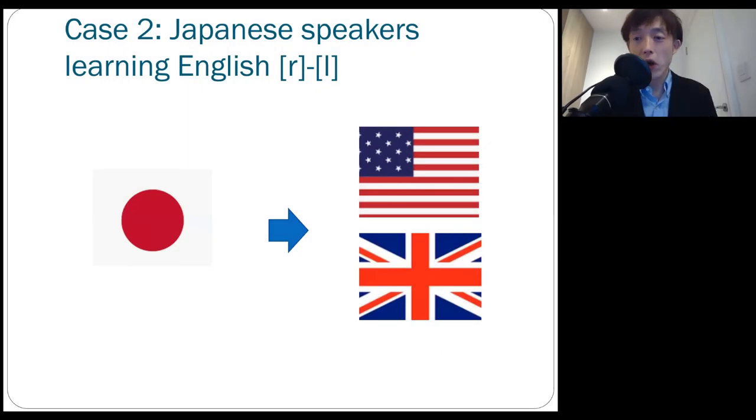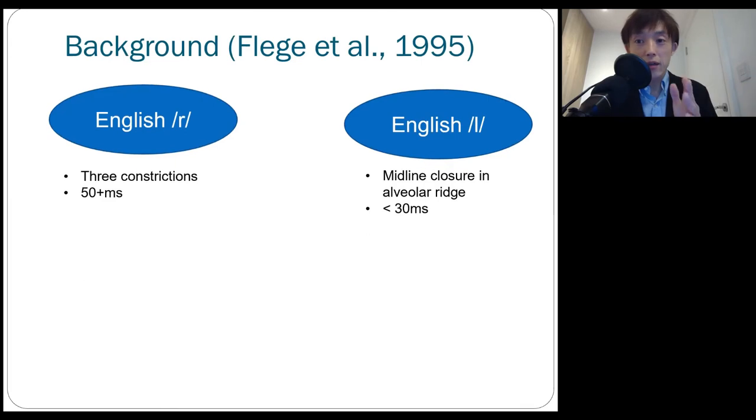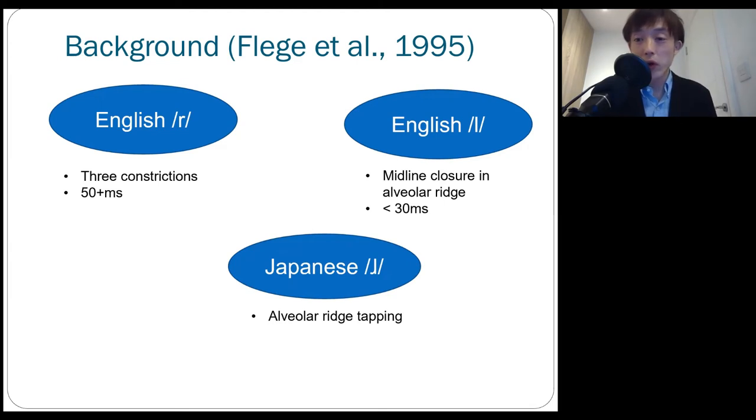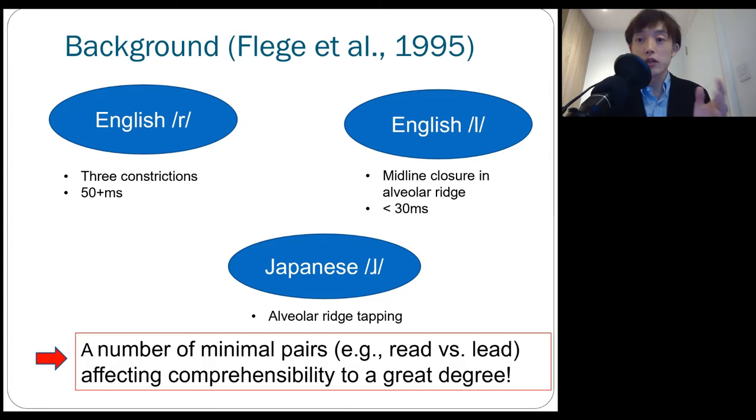Then let's shift our attention to the other scenario, which is Japanese speakers learning English R and L. In this case, English has two approximant sounds, R and L, but in Japanese, there is only one counterpart, Japanese tap sound, which is somewhere in between R and L. As you know, there are a bunch of minimal pairs differing in R and L. Therefore, if you don't distinguish them, you'll end up with a lot of communication problems.